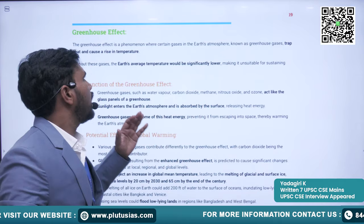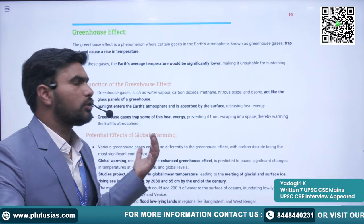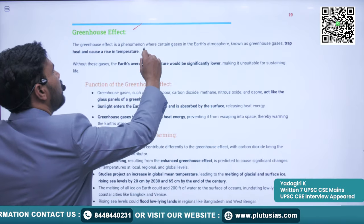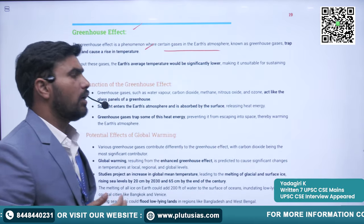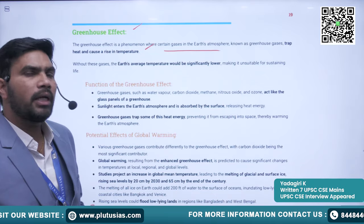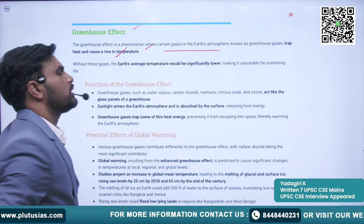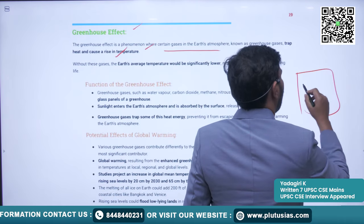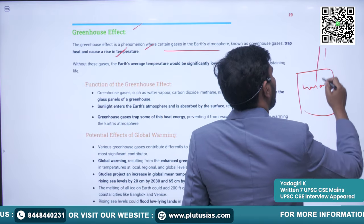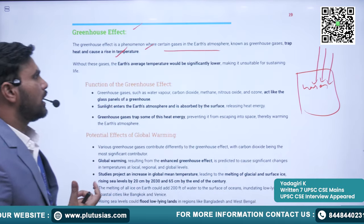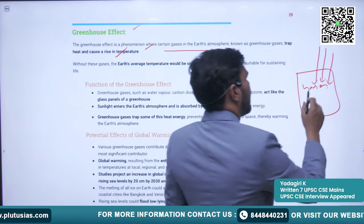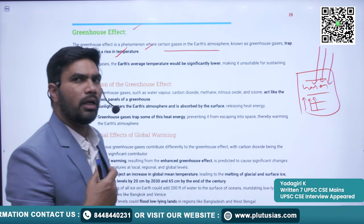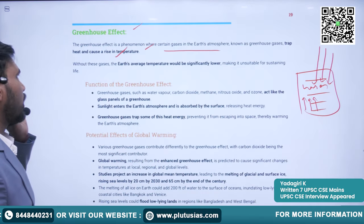The first of three important components is the greenhouse effect. The greenhouse effect is a phenomenon where certain gases in the earth's atmosphere — known as greenhouse gases — trap heat and cause a rise in temperature. These gases trap the energy and light coming from the sun and cause a rise in temperature.